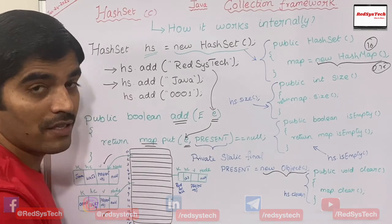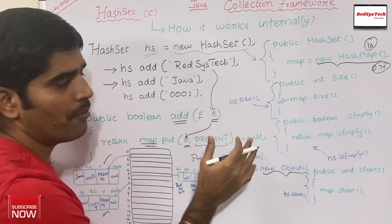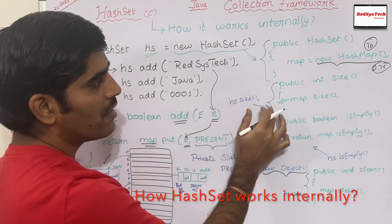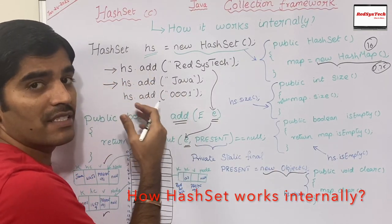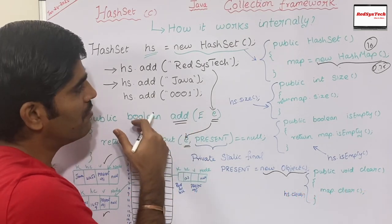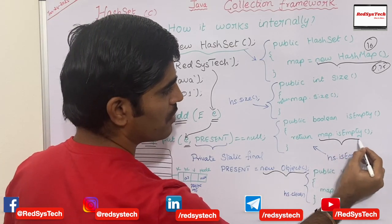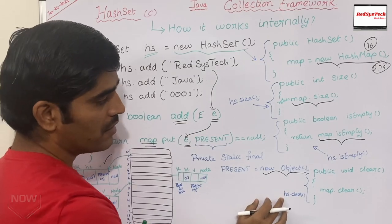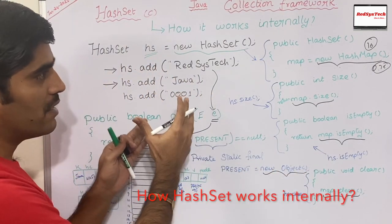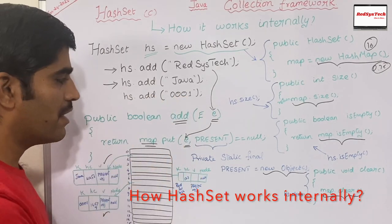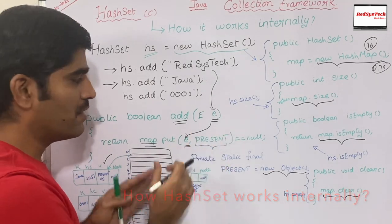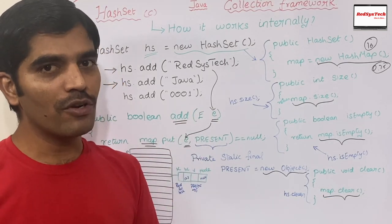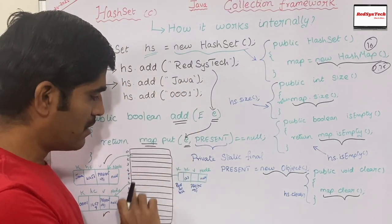Now let me go through some other methods in HashSet and how they reuse HashMap. We have hs.size(), which internally uses map.size(). Similarly, hs.isEmpty() returns boolean — true if empty, false if not — and that also uses map.isEmpty(). And if you want to clear everything from the HashSet, you can use hs.clear(), which internally uses map.clear(). This is how HashSet internally uses HashMap. In our previous video we saw in detail how HashMap internally stores data, and now we are going to run the same program in Eclipse in debug mode to see how each line of code executes.